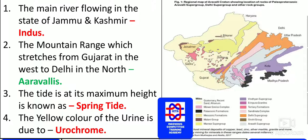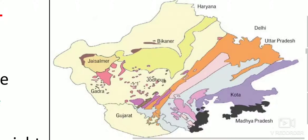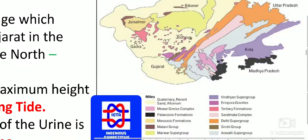You can see on the right side how exactly the Aravalli ranges are distributed across Gujarat, Jodhpur, Bikaner, and Haryana — everything about the Aravalli ranges is illustrated.